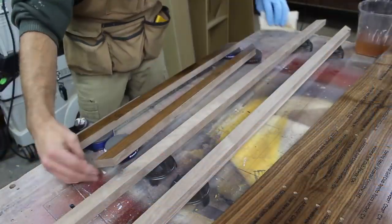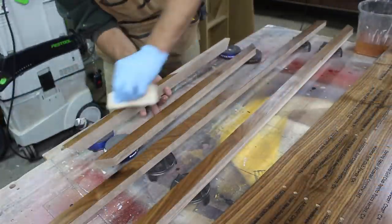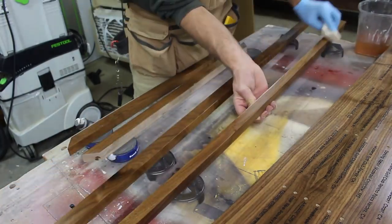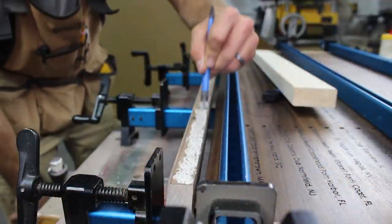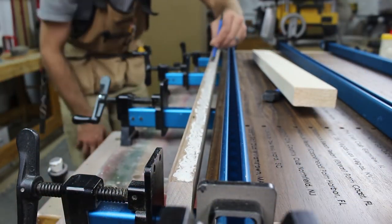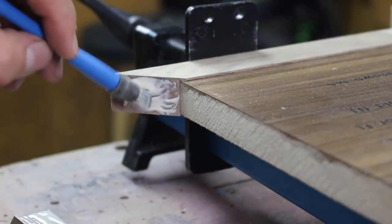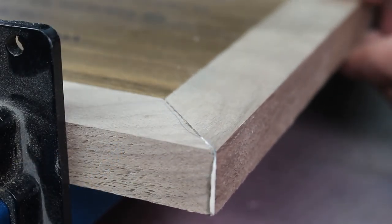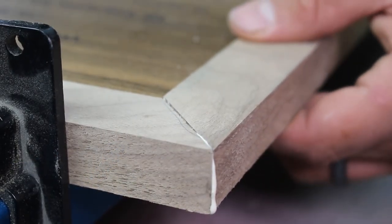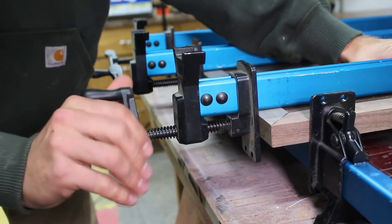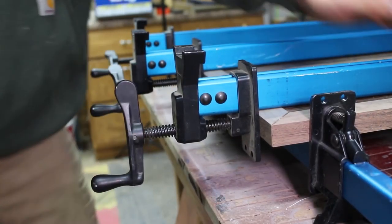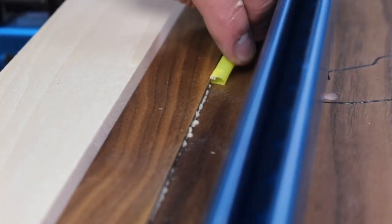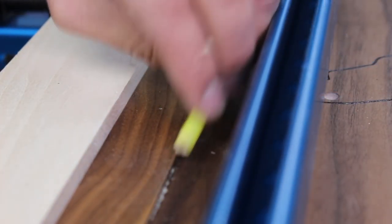Once the moldings are completed, I apply a few coats of lacquer and glue them on. Using a regular drinking straw is a great way to clean up glue squeeze out.